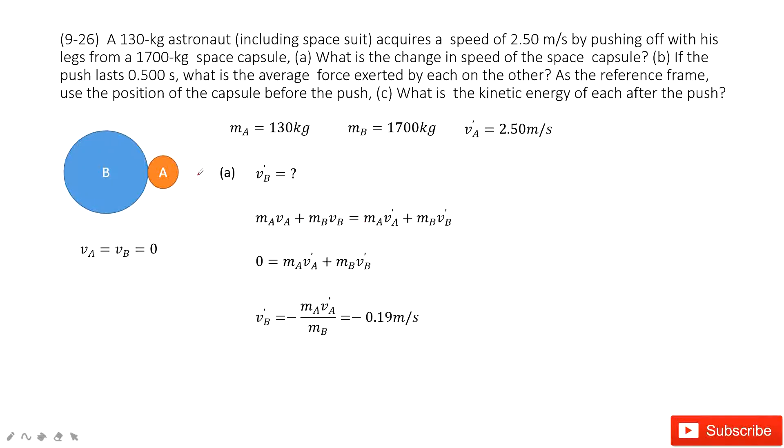In this problem, we can see the astronaut with a space capsule. The mass of this astronaut we consider is object A. The space capsule we consider is object B.